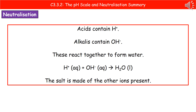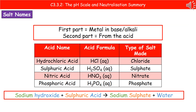The way we work out what salt is made is by looking at two parts of our equation. With the word equation — sodium hydroxide reacting with sulfuric acid — we're going to make sodium sulfate and water.